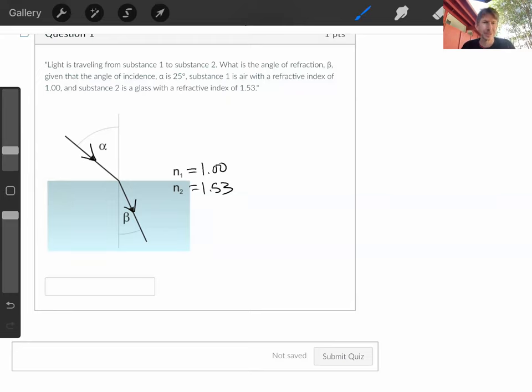Now we're looking for the angle of refraction beta. So let's write out Snell's Law. It says the index of refraction in material one times sine alpha equals index of refraction in material two times sine of beta.